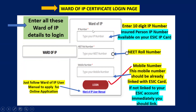The first field is the IP number — this is the Insured Person IP number, available on the ESIC IP card. It is a 10-digit IP number, which is the parent's ESIC IP card number. Next, you should fill in the NEET roll number — the student NEET roll number which is available on the admit card. Next, enter the mobile number of the insured person.